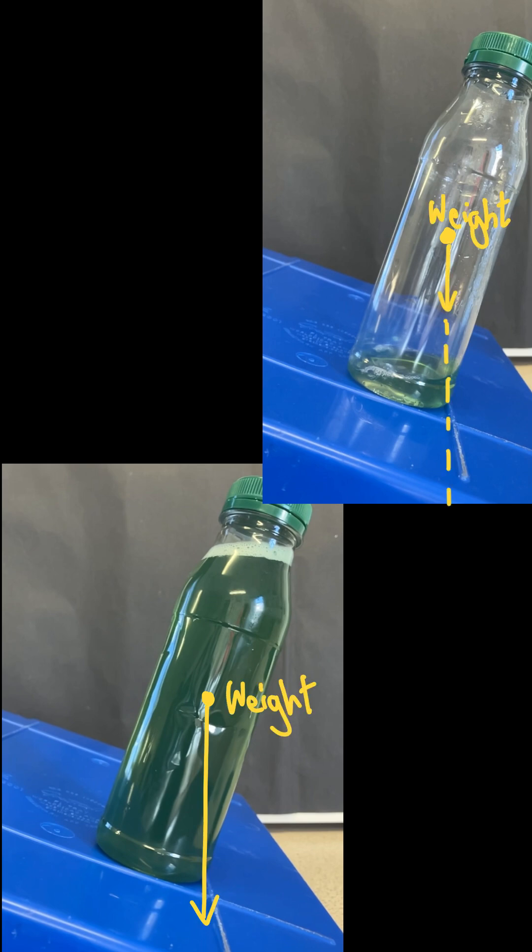Now let's add force arrows showing the weight of each of the bottles. And because this one is almost empty, it's going to have a much smaller weight than this one. But if you notice, in this position where they're just about to topple, the line of action of the weight is just going outside the base of the bottle.